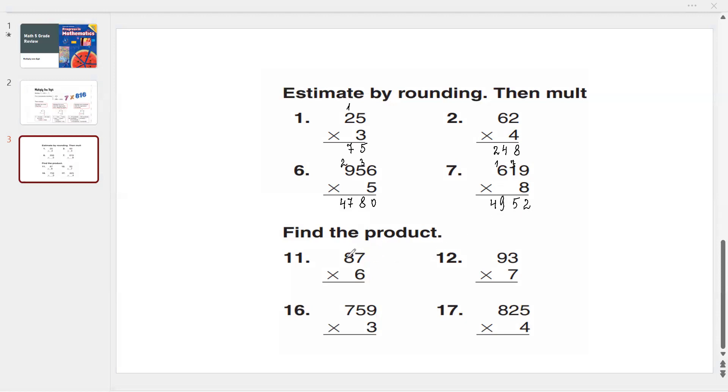Let's do another example: 87 times 6. 6 times 7 is 42: write 2, 4 goes up. 6 times 8 is 48, plus 4 is 52.